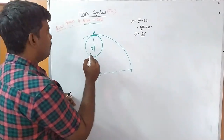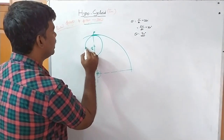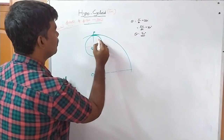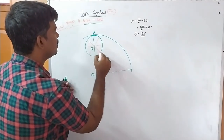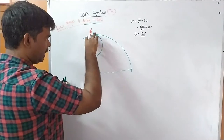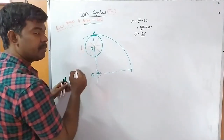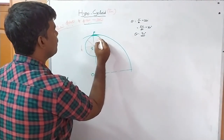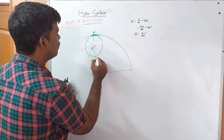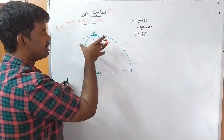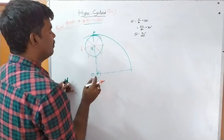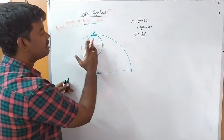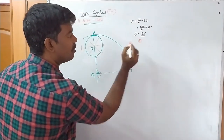Following the same procedure as epicycloid, divide the rolling wheel circle into n equal parts. For example, divide into eight equal parts. Starting from point P, since it rotates counterclockwise, mark points 1, 2, 3, 4, 5, 6, 7, and 8. Similarly, divide the given angle of 90 degrees into eight equal parts.